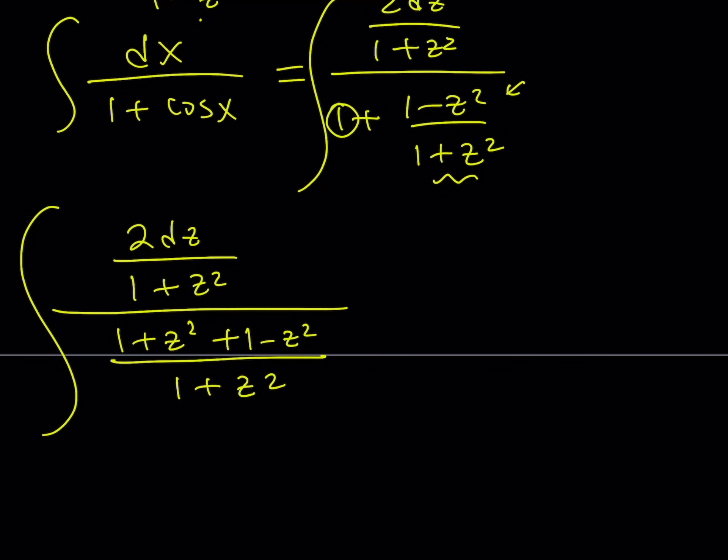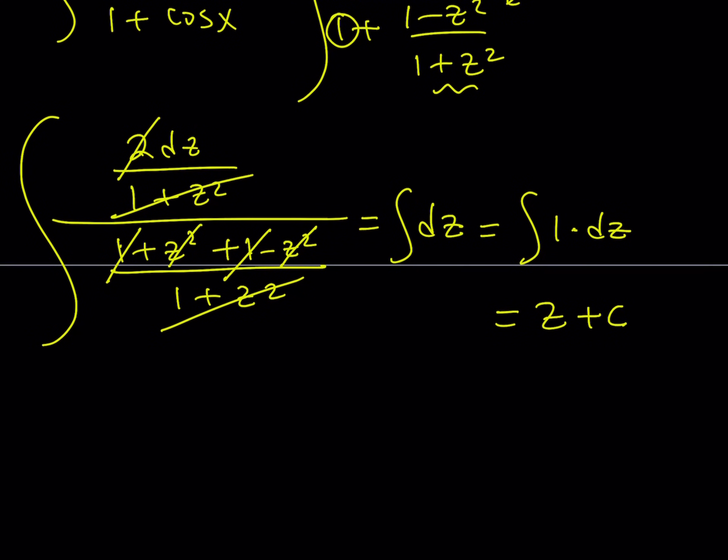Notice that 1 plus z squared cancels out. Not only that, z squared minus z squared also cancels out, and 1 plus 1 equals 2. So 2 divided by 2 equals 1. See how that collapses? We end up with dz. The integral of dz is just 1 dz. The derivative of z is 1. So the integral of 1 dz is going to be z plus c. Because the derivative of z is 1. Don't forget the constant c, otherwise your teacher is going to be real mad at you.